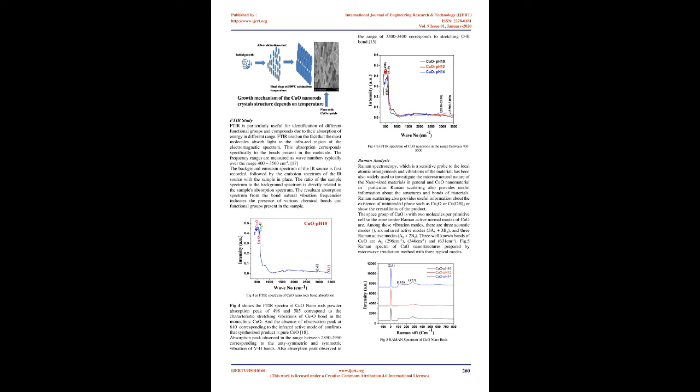Raman Analysis: Raman spectroscopy, which is a sensitive probe to the local atomic arrangements and vibrations of the material, has been widely used to investigate the microstructural nature of nanosized materials in general and CuO nanomaterials in particular. Raman scattering also provides useful information about the structures and bonds of materials, including the existence of unintended phases such as Cu₂O or CuO, or to show the crystallinity of the product. The space group of CuO has two molecules per primitive cell, so the zone-center Raman active normal modes include three acoustic modes, six infrared active modes (3Au + 3Bu), and three Raman active modes (Ag and 2Bg).